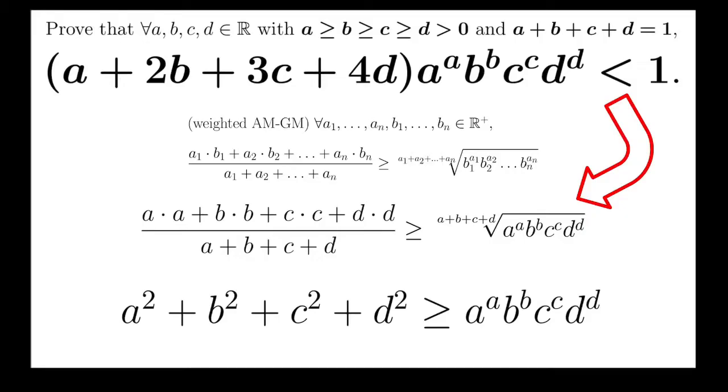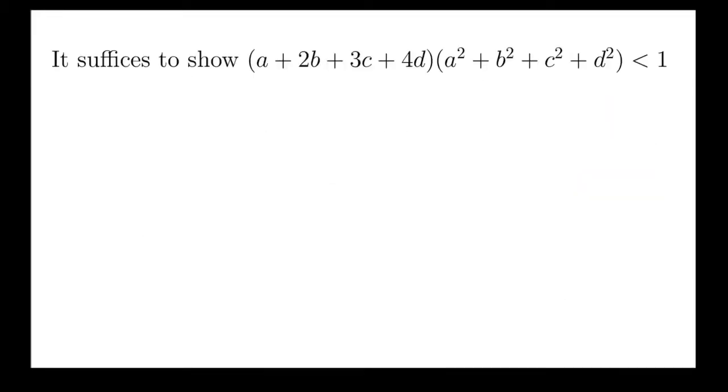Having this, it suffices to prove that this product A plus 2B plus 3C times 4D times A2 plus B2 plus C2 plus D2 is less than 1. Now this is much simpler because it's just another polynomial inequality. To compare things more easily, I would homogenize both sides, which means to make both sides polynomials of the same degree. So now you may notice that the left-hand side is of degree 3 and the right-hand side is a constant. So we need to do some work on that.